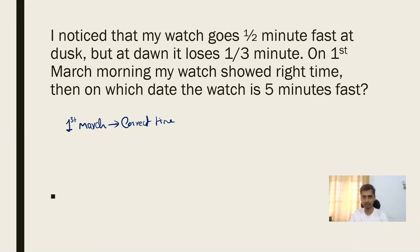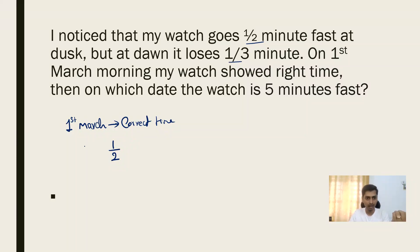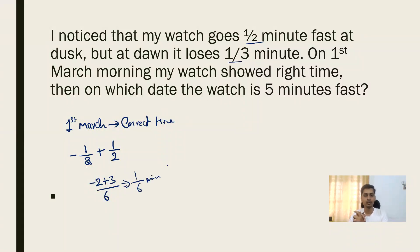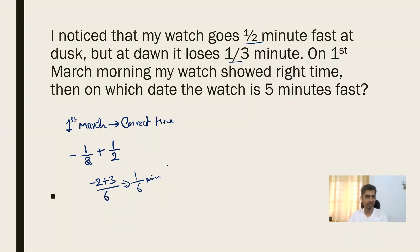Starting from March 1st at 5 AM: on the same day evening it gains half a minute, but at the next dawn it loses one-third of a minute. So the overall daily deviation is minus one-third plus one-half, which equals minus two plus three over six, giving us one-sixth of a minute. That means in 24 hours — from March 1st 5 AM to March 2nd 5 AM — the watch gains one-sixth of a minute.